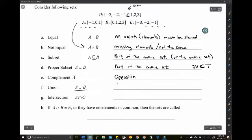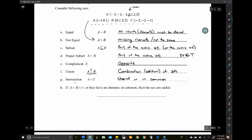The union is the combination of both sets. Think of it as addition. And intersection, not subtraction, is what is being shared, or in common. If they don't share anything, or they have no elements in common, then the sets are called disjoint. For example, cats and baseball have nothing in common.